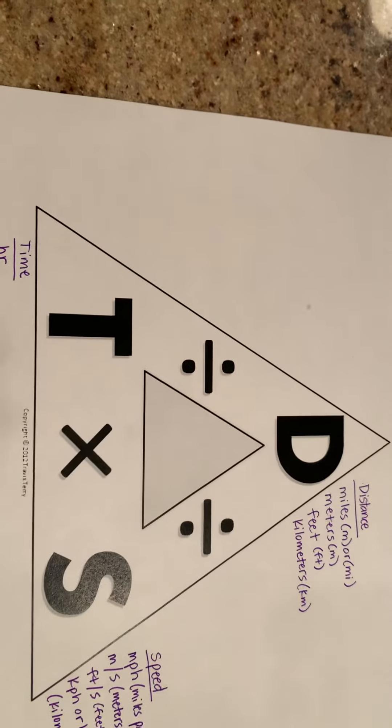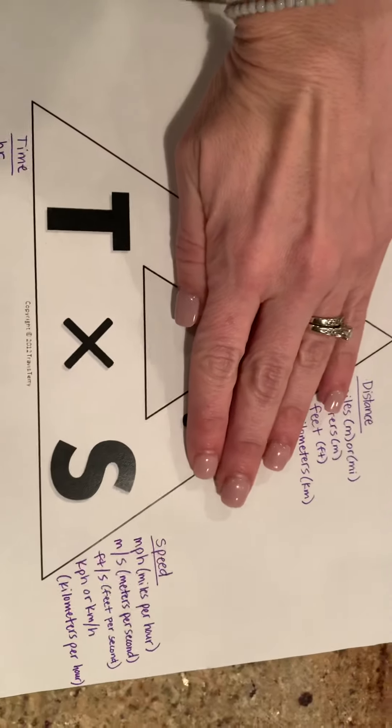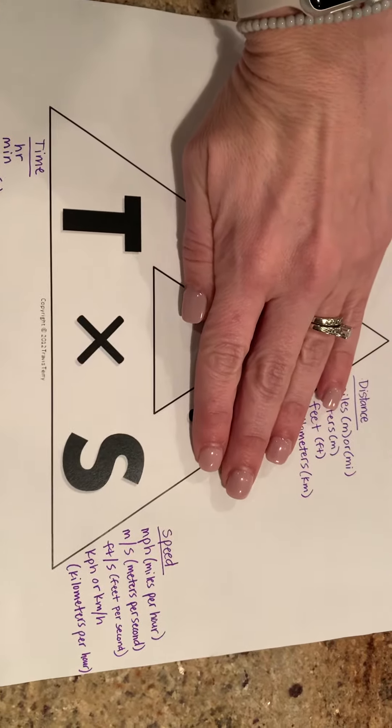Alright, let's say in our problem it asks us for the distance. Then we cover up distance, and this time we're going to multiply the time it takes us and the speed that we're traveling.